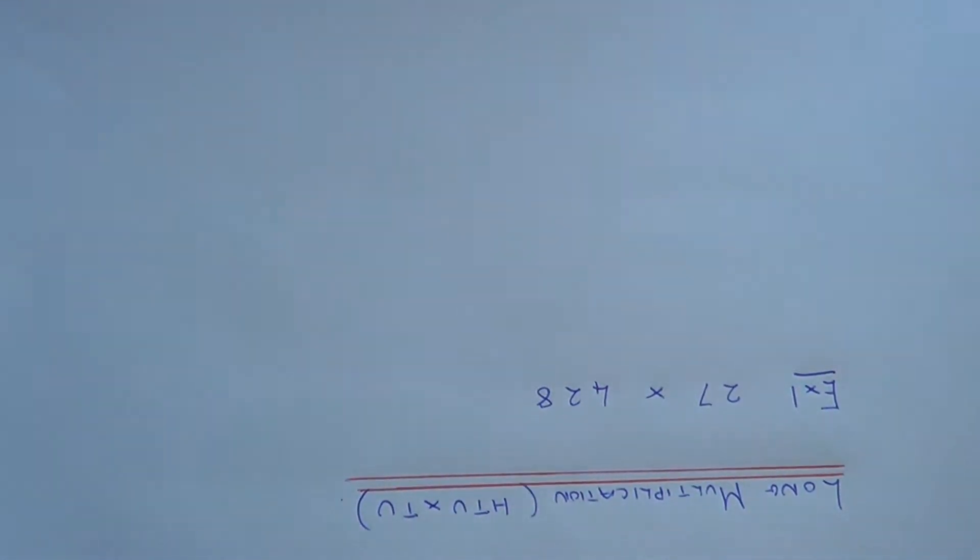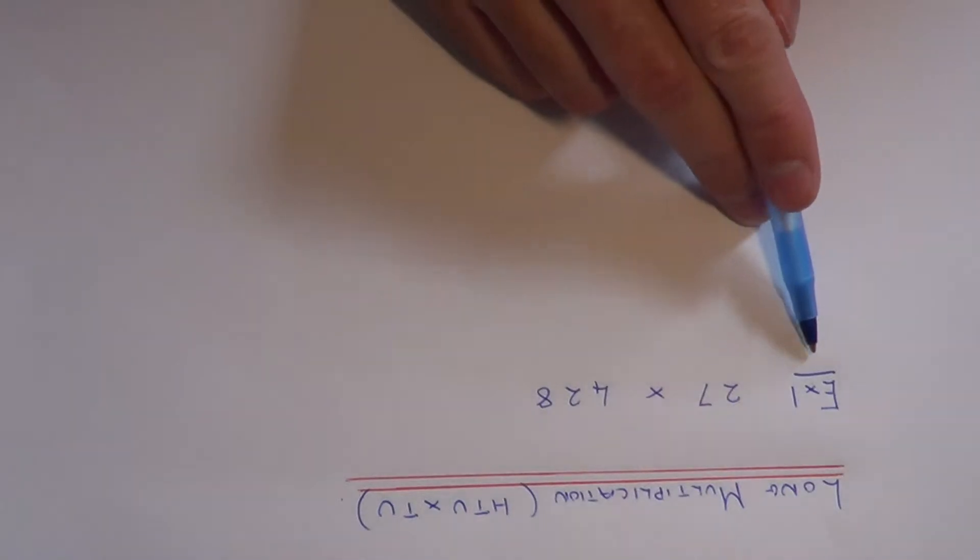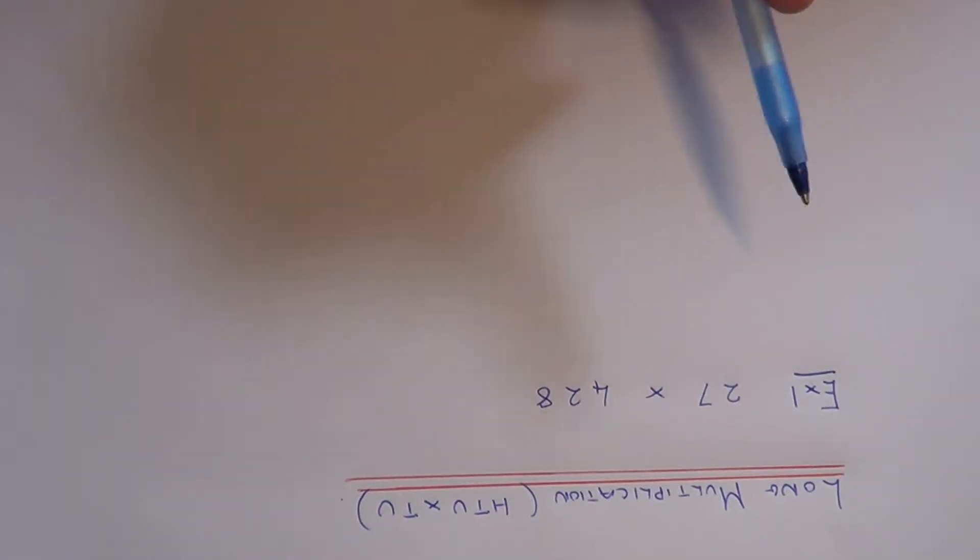Today I'm going to show you how to carry out long multiplication on a 3 digit number multiplied by a 2 digit number. So let's have a look at our example here. We've got to do 27 times 428.